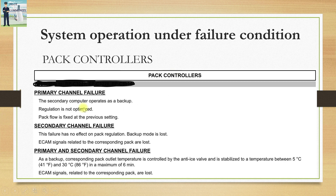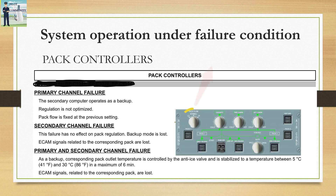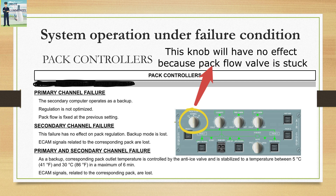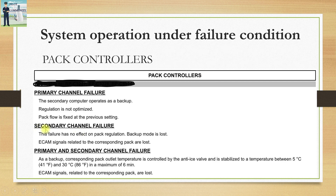Pack controllers also have primary and secondary channels. In case of primary channel failure, the secondary computer operates as a backup, but regulation is not optimized — whatever the last flow setting was will be maintained and any later selection will have no effect. A secondary channel failure has no effect on pack regulation but the backup mode is lost and ECAM signals related to the corresponding pack will also be lost. In the case of both primary and secondary channel failure, the corresponding pack outlet temperature will be controlled by the anti-ice valve, stabilized between 5 and 30 degrees centigrade within 6 minutes.